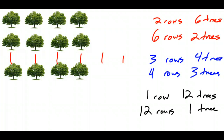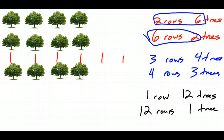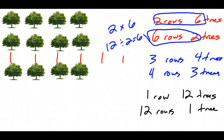If you've noticed, each of these pairs — two and six, six and two — multiply together to give twelve, because two times six equals twelve. That should be obvious: if you split twelve into two equal rows, you have six trees in each row. So each of these numbers — one, two, three, four, six, and twelve — divide evenly into twelve, without a remainder, because we can split them into that number of rows with an equal and whole number of trees.